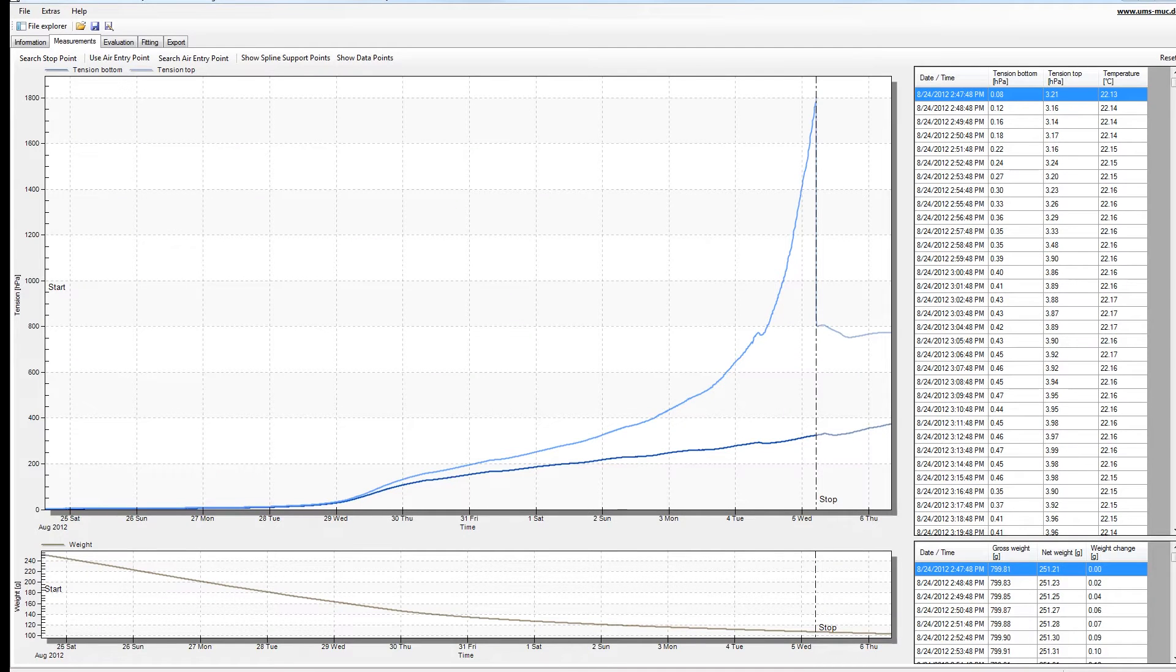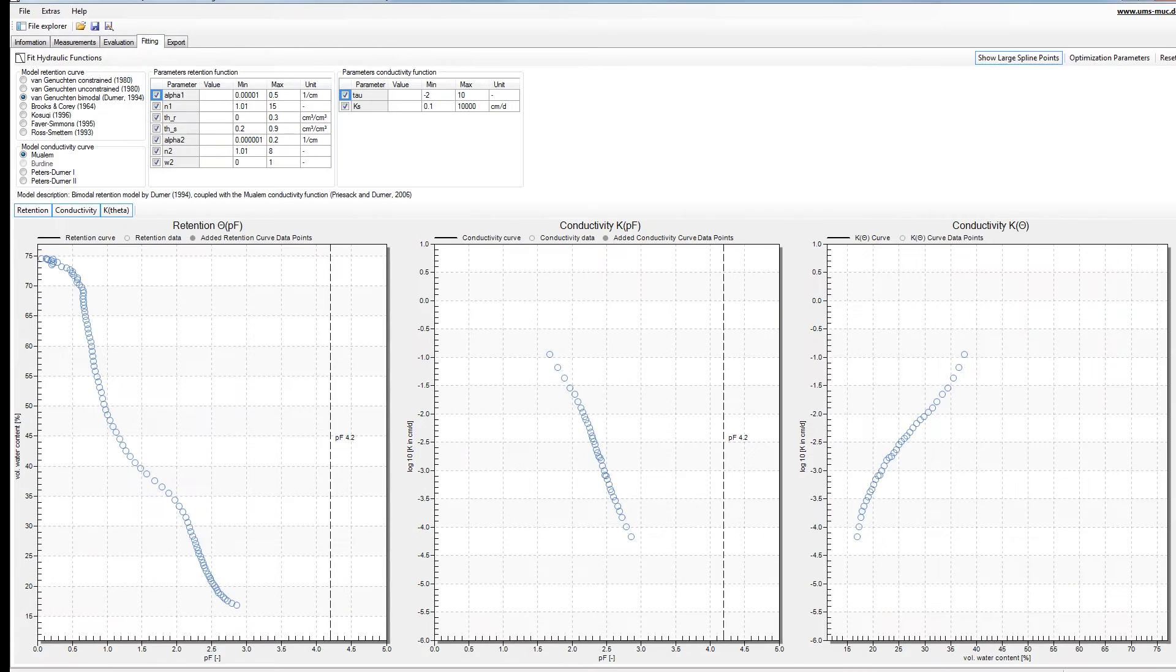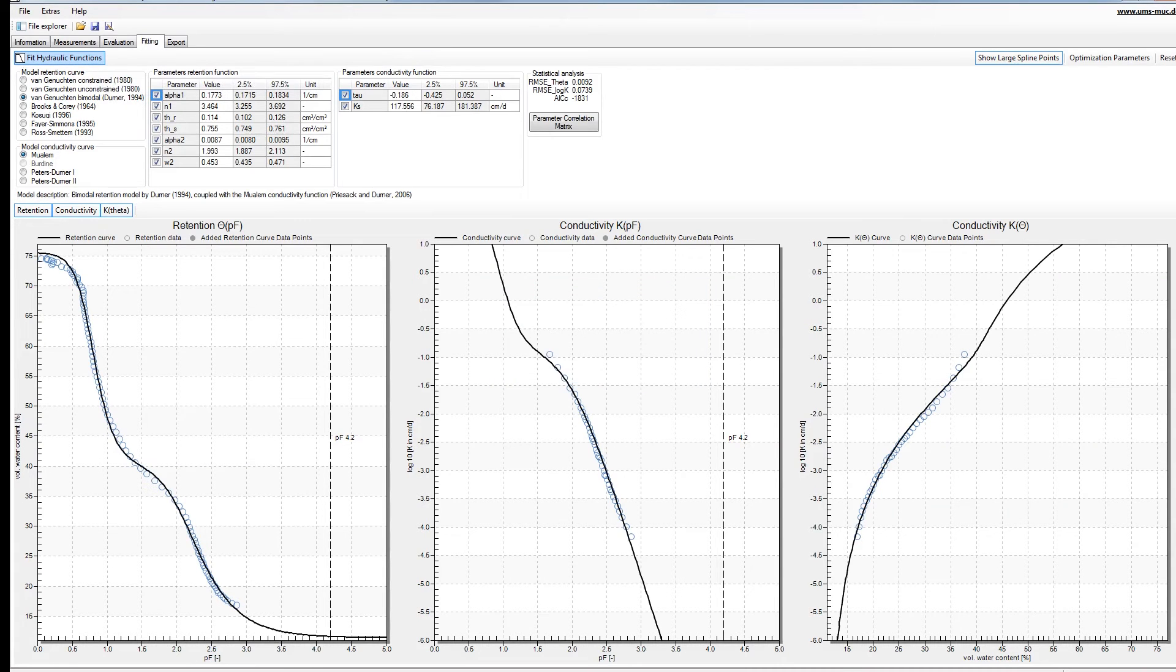These are data from a poorly graded soilless substrate that is used primarily in greenhouse applications. The HyProp data show that this curve is much more interesting than you would predict from only a few data points.